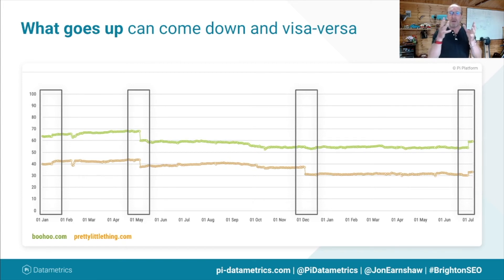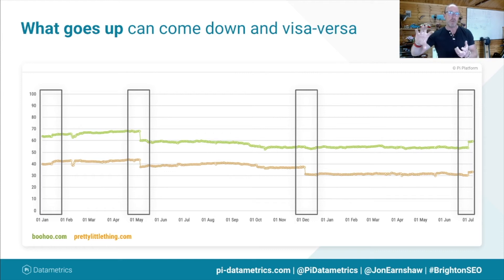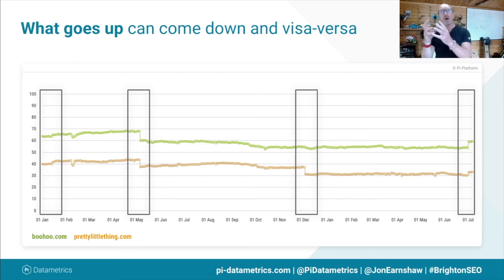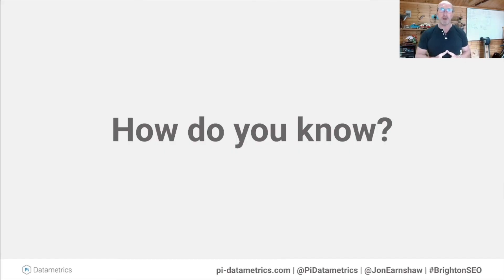What goes up can come down. Remember I mentioned Boohoo — you can see in that second block the May 4th update, one of the previous core updates from last year: they tanked, and then leveled. There's no recovery from a core, but as you'll see later there are things you can do by turning other dials. Boohoo then went up in the July update — perhaps they've been working hard on their EAT signals. Pretty Little Thing shows a very similar pattern — they dropped in May, dropped in December.